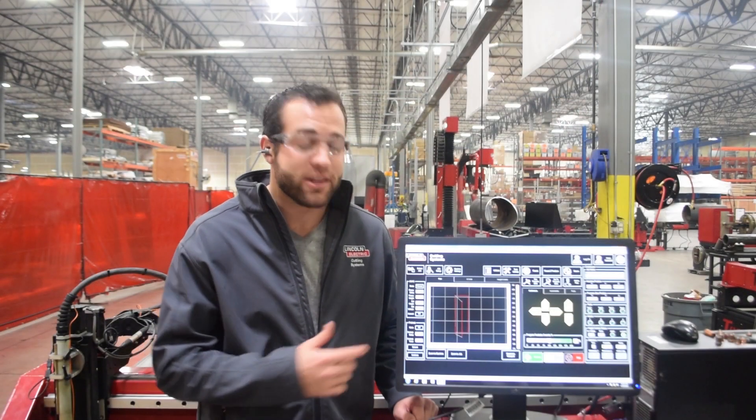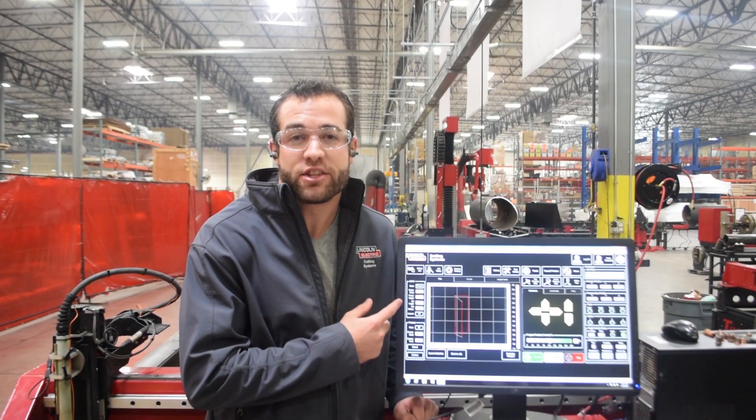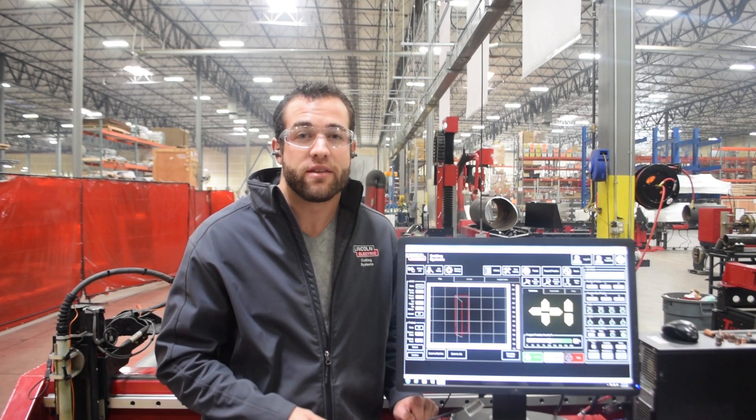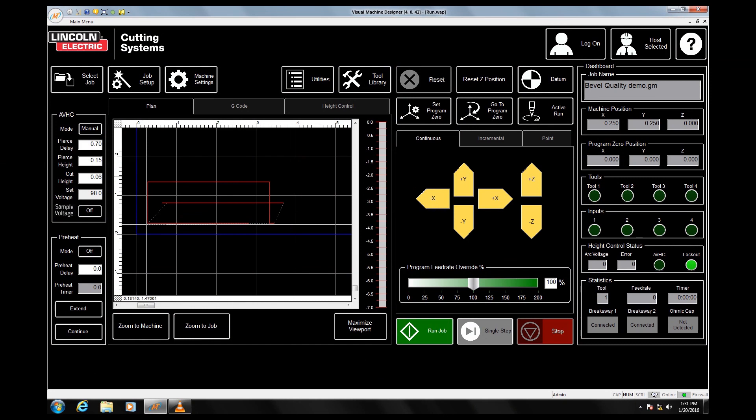You can find the remainder of the height control inputs on the left-hand side of the visual machine designer interface. You'll find an auto and a manual switch at the very top. This button tells the height controller to use either the cut height input or the set voltage input programmed below.